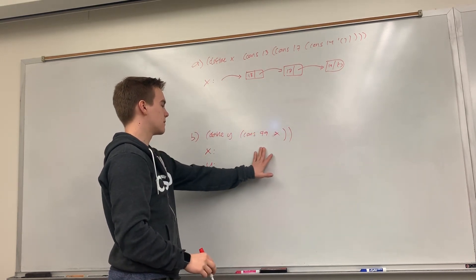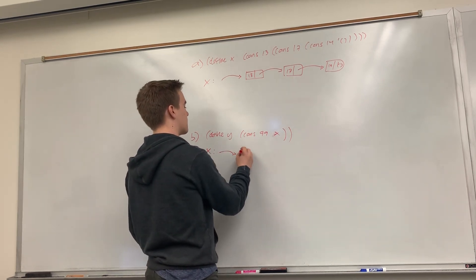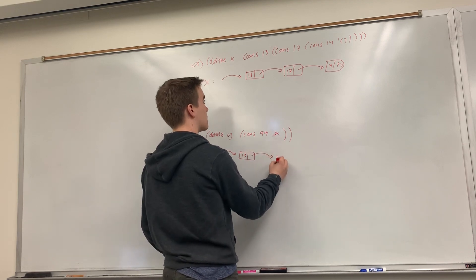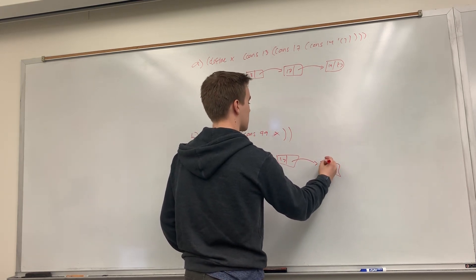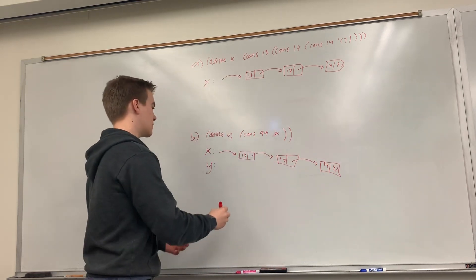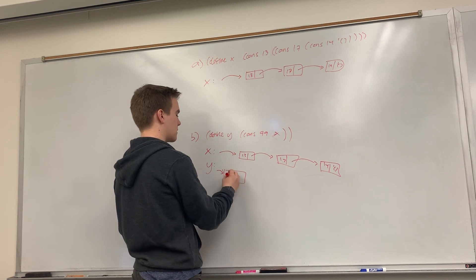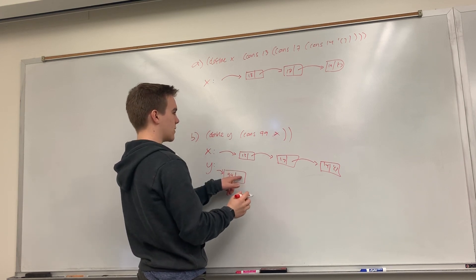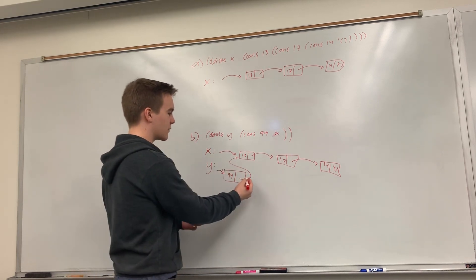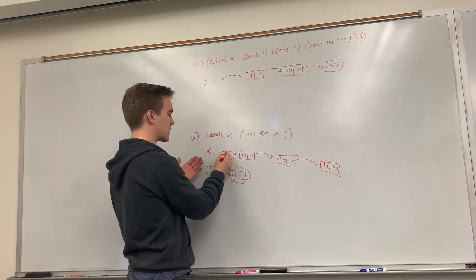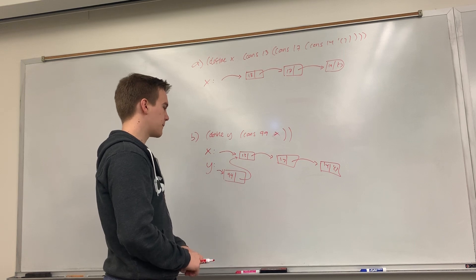Then it asks us what if we define y as cons 99 onto x. Well, x will be the exact same as above. But y will now be a pair, a pointer to a pair with 99, and then this pointer will point to the first part of x. This is the equivalent of x. This pointer here is what x is. It is this pointer or this pointer which point to the same thing functionally in the same pointer.